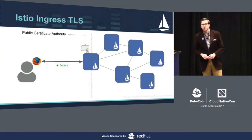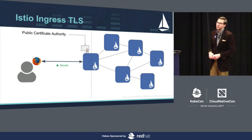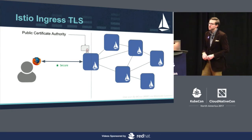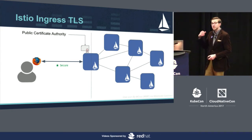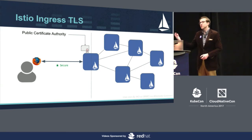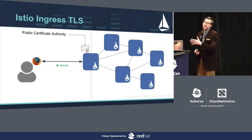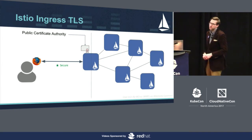Istio also has an ingress service, and as a standard feature of ingress we can terminate TLS. This is a bit of a work in progress — today Istio allows you to insert a single certificate into the Istio ingress. A lot of what we're moving to is having more than one service exposed by your cluster, and for that we need TLS SNI. That's coming later and Dan will talk a bit more about that on the roadmap.